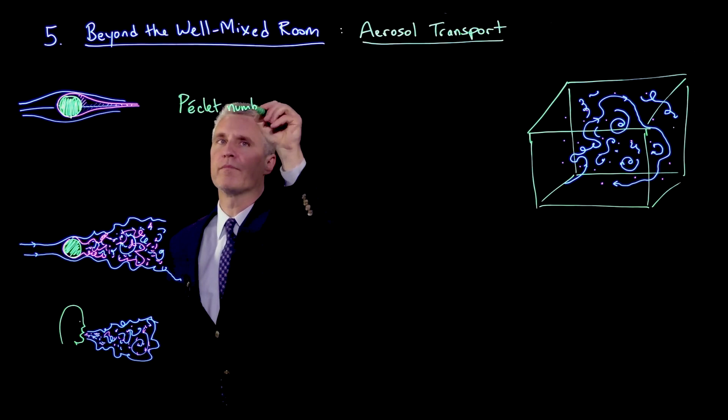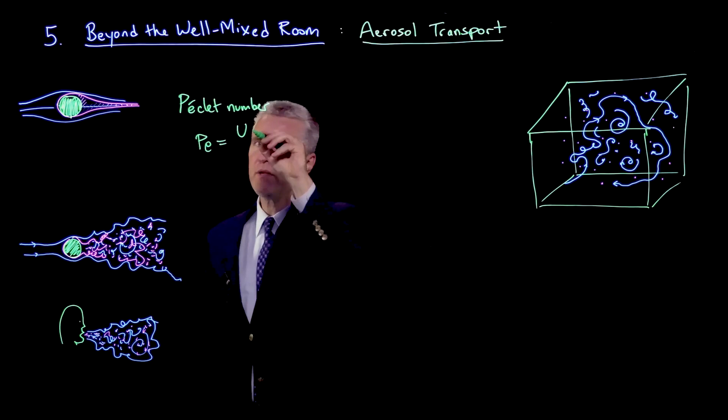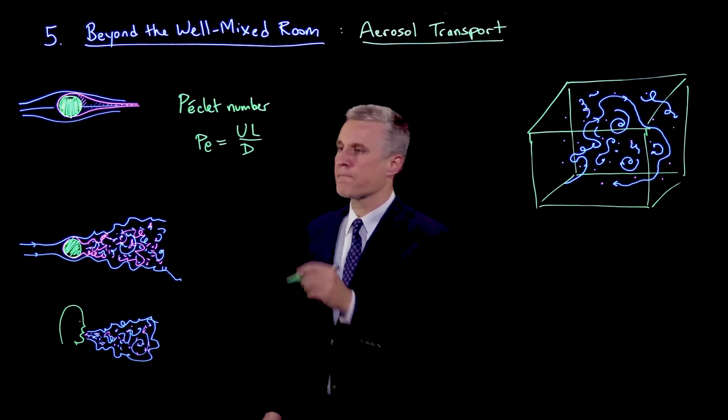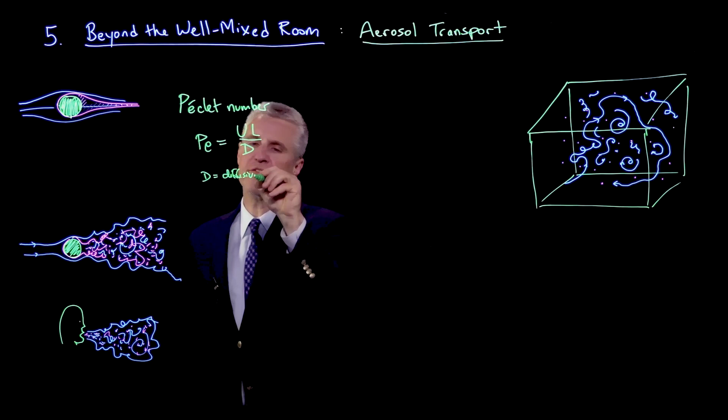The Peclet number is defined as the velocity times a length scale divided by D, where D is the mass diffusivity. Normally, D is the molecular diffusivity, or the diffusivity of the droplets, or whatever the individual particles are.